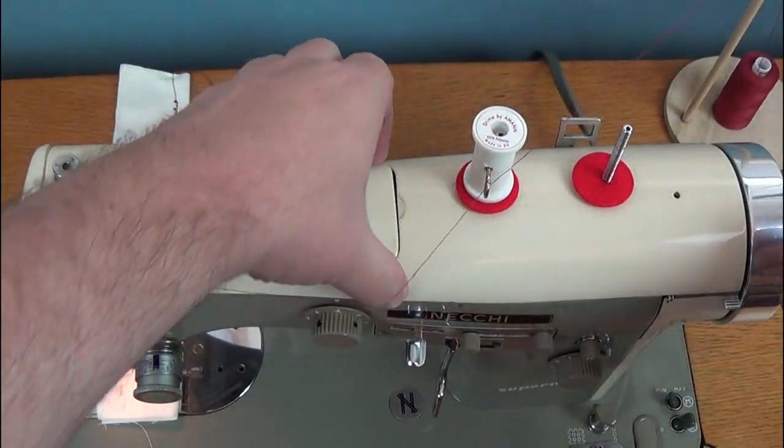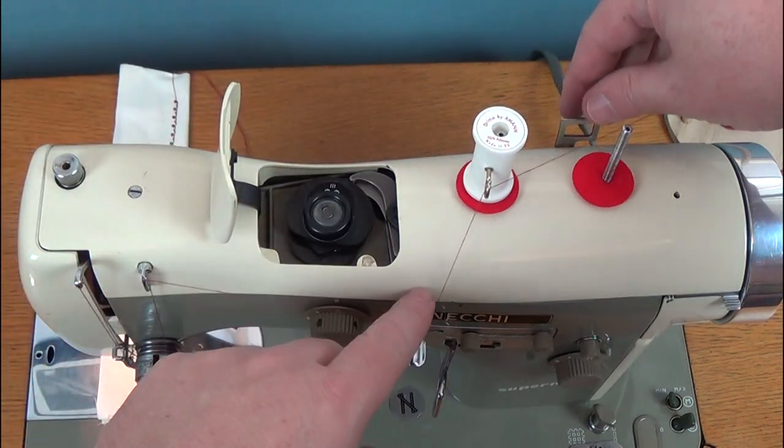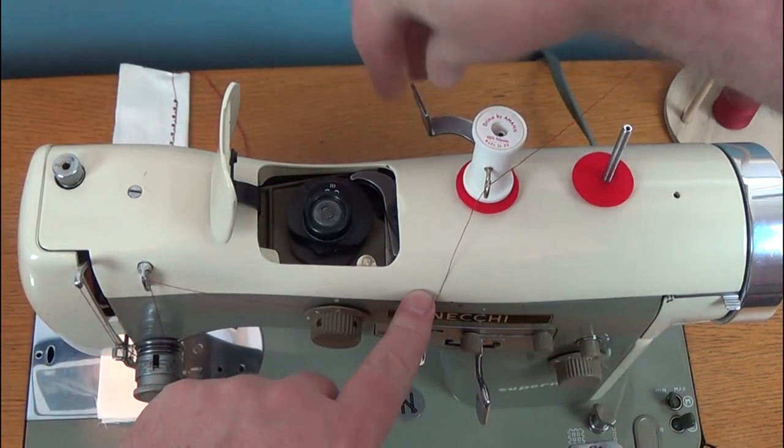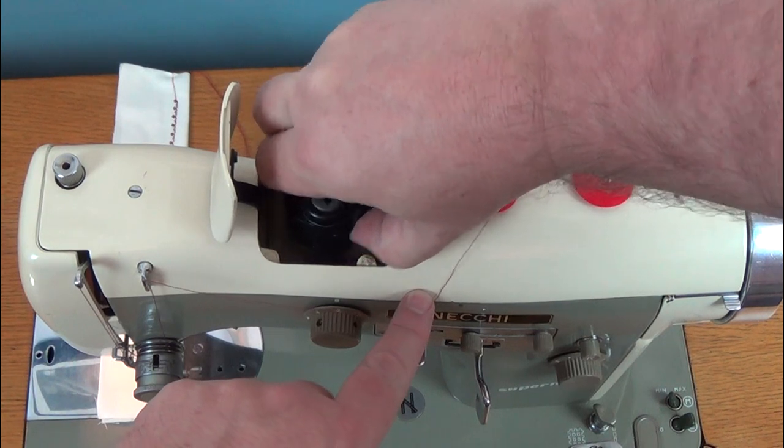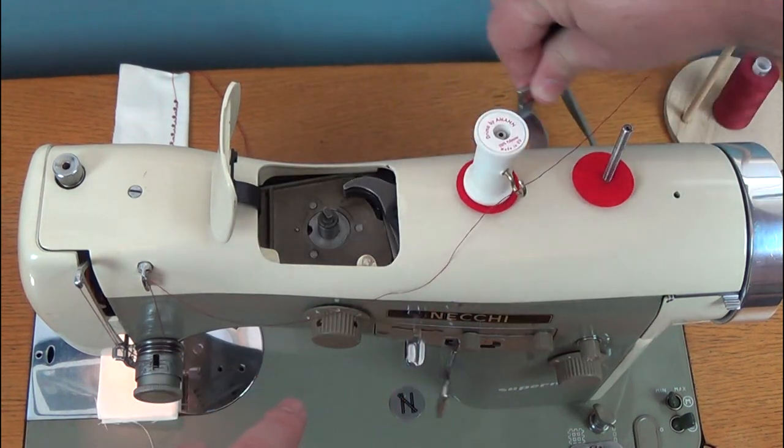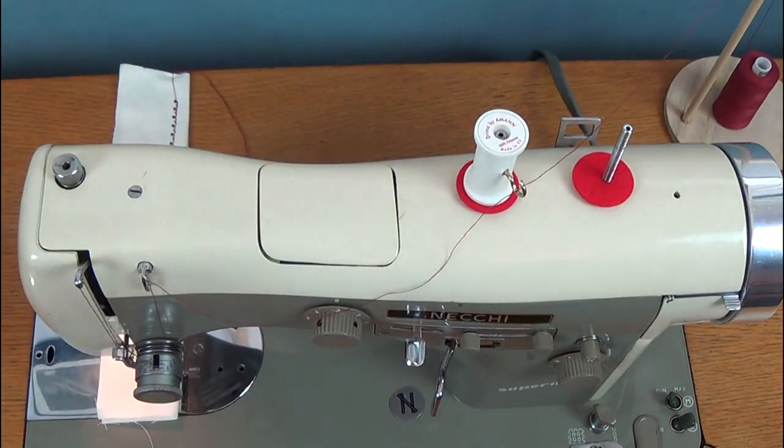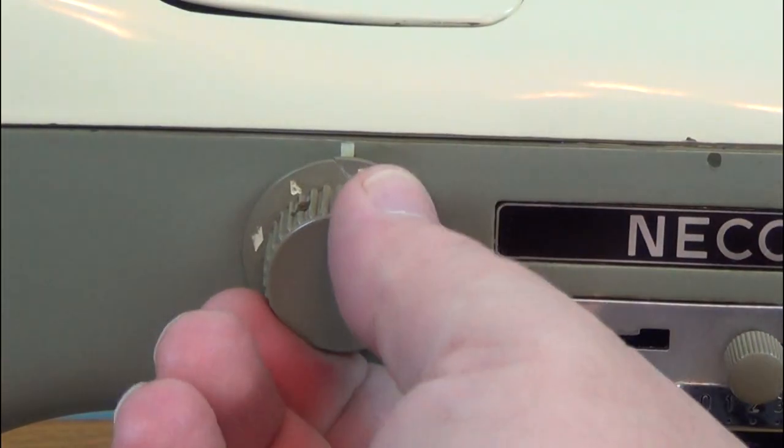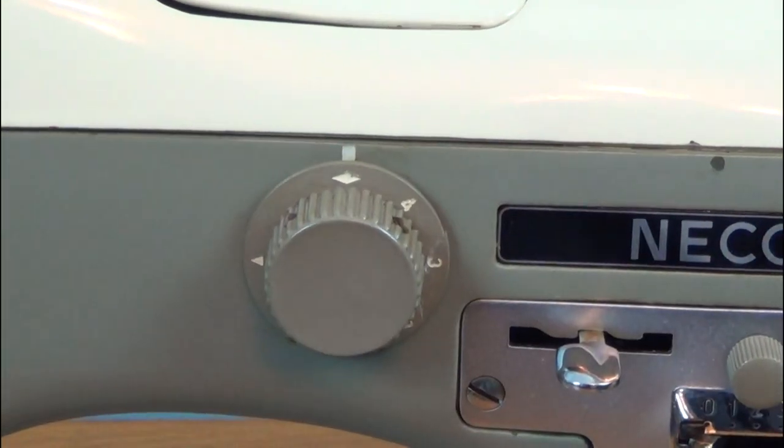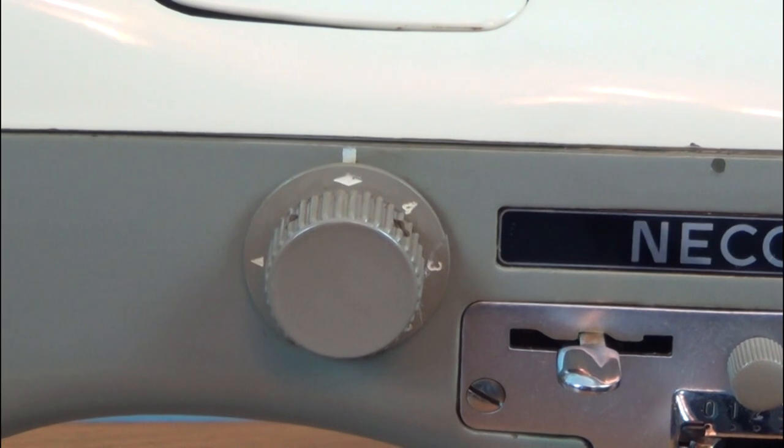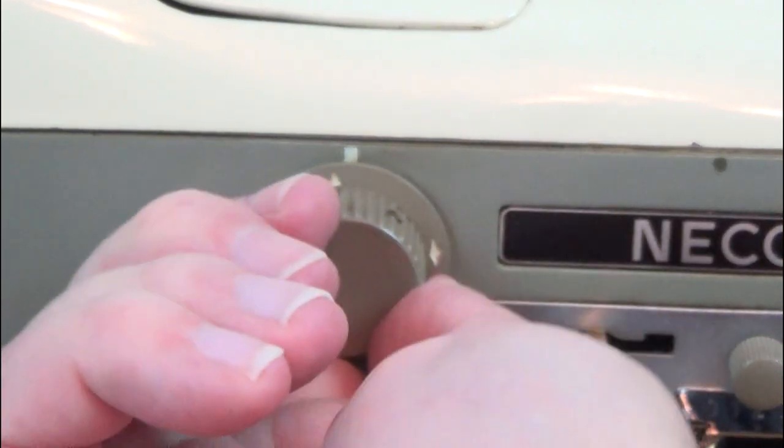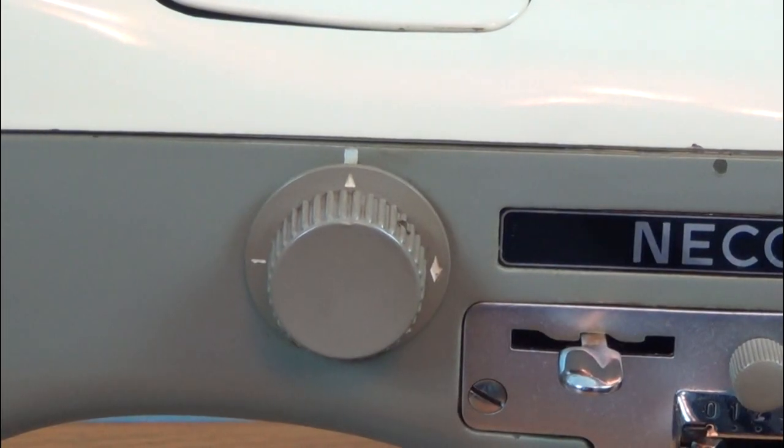When you want to go back to normal stitching, move the cam follower lever over and lift out the cam. And put the cam follower lever back. Move the pattern length dial to the diamond mark and turn the hand wheel towards you until you hear a faint click. Then move the dial round to the triangle and we're ready to sew again.